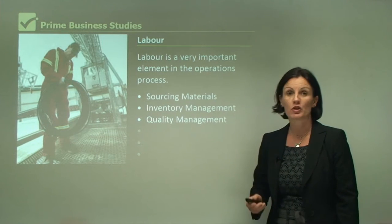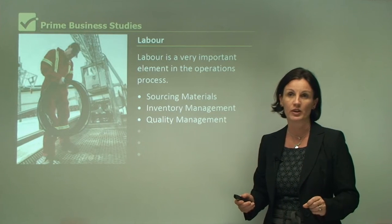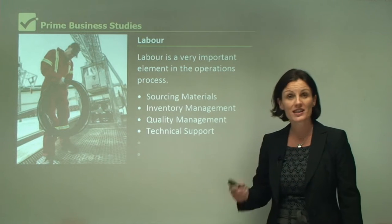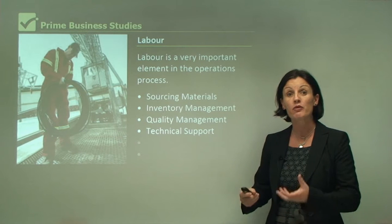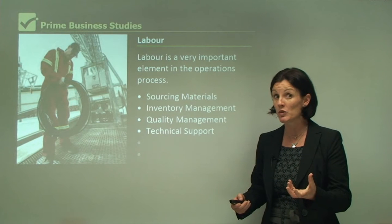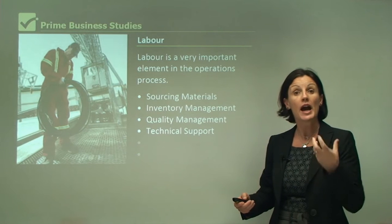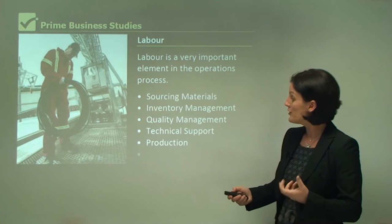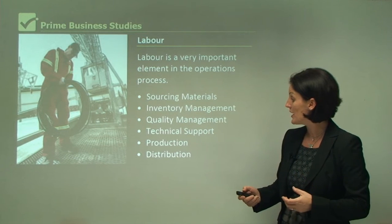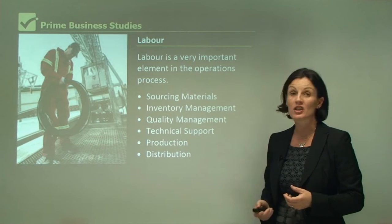Humans are in charge of quality management. They've got to make sure that these products are a hundred percent in quality. Consumers are very fussy about products. They provide technical support, which may be for the end consumer. If I buy a mobile phone, I may have difficulty with that mobile phone and I'll expect to be able to ring the business and speak to a human about that product. Obviously humans are involved in production at different stages, and lastly, they need to get that product out to the consumer through distribution.